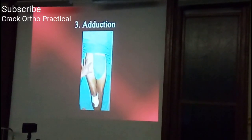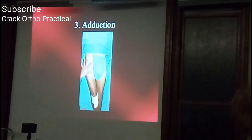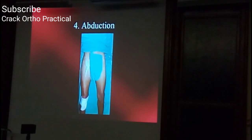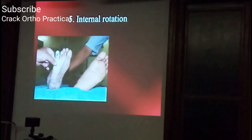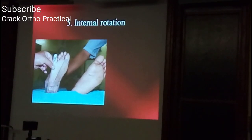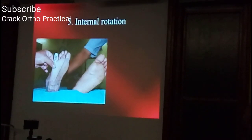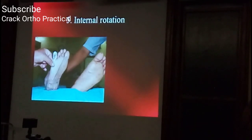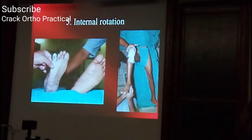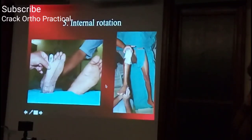To measure adduction: normal adduction crosses the middle third of the opposite thigh. If it crosses below middle third, adduction is restricted. Measure adduction and abduction with a goniometer or by visual estimation, always stabilizing the pelvis. For rotations, test first in extension, then in flexion. In extension, measure by how much the foot or patella internally rotates. Internal rotation means the leg swings outward.